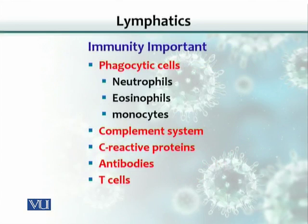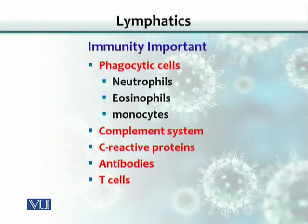Immunity is important in both systems — cardiovascular as well as lymphatic. Both systems contain cells of the immune system. Phagocytic cells, including neutrophils, eosinophils, and monocytes, are present in both the blood vascular system and the lymphatic system. The complement system is another large system of proteins present in the blood vascular system and other body fluids. C-reactive proteins are very special proteins released in response to inflammation — released by the liver and present in the blood circulatory system — and once in the fluid, they can travel anywhere because blood circulates throughout the body.